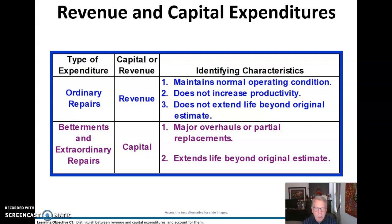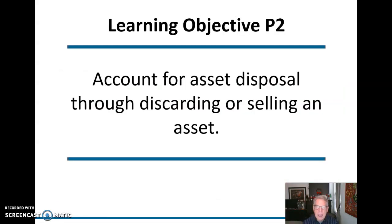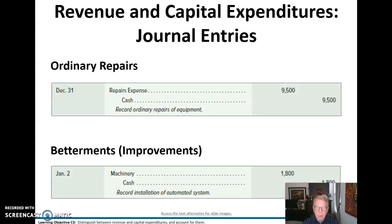Extraordinary repairs extend the life beyond the original estimate. For ordinary repairs, we simply debit repairs expense on the income statement and credit cash. For betterments, we increase the asset's value — in this case by $1,800 to record the installation of an automated system. We use the same approach for extraordinary repairs.